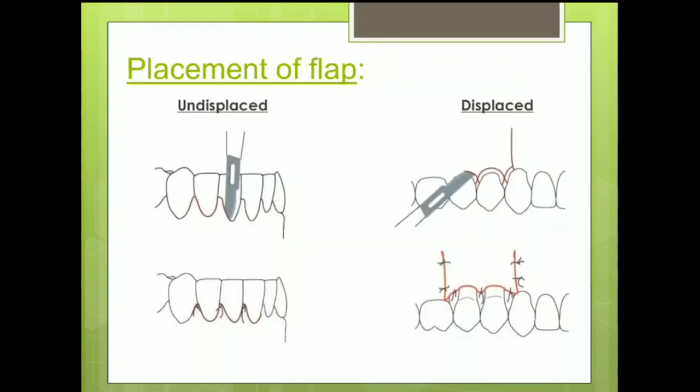Coming to the replacement or repositioning of the flap after the surgical procedure, it is called an undisplaced or unrepositioned flap when it is sutured back at the same position from where it was reflected — we are talking about the position of the gingival margin here. On the other hand, if suturing is performed at a different position, it is called a displaced flap, based on the direction in which it was displaced: apical, coronal, or lateral.